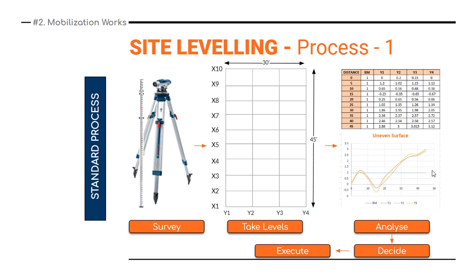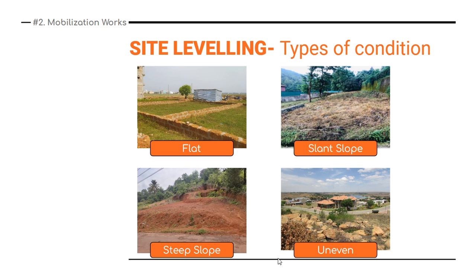In the graph, the benchmark level is shown. Areas above the benchmark need cutting, and areas below it need filling. You cut from the high areas and fill the low areas. If more filling material is required, it can be arranged using sand or any backfilling soil. The process is to analyze, decide, and then execute.